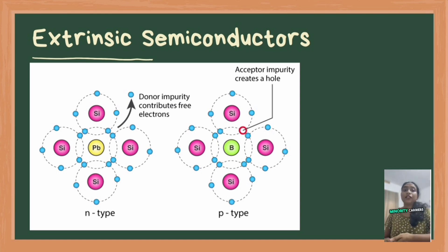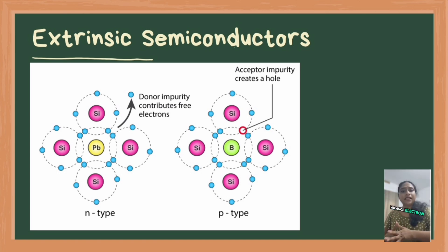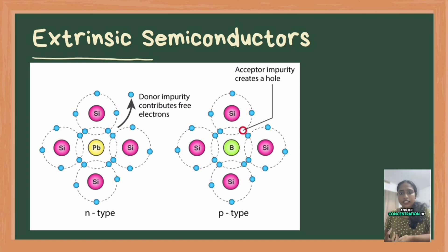In N-type semiconductors, majority carriers are electrons and minority carriers are holes. To form a P-type semiconductor, a trivalent impurity is added. These elements have three electrons in their valence shell and are from group 3 of the periodic table, such as boron, aluminium, etc. These dopant atoms have one fewer valence electron compared to the semiconductor material. When added to the semiconductor, they take one electron and create holes in the crystal lattice. In P-type semiconductors, conductivity is mainly due to holes. The material is entirely neutral, the current is due to hole current, and the concentration of holes is much greater than that of electrons. Majority carriers are holes and minority carriers are electrons.